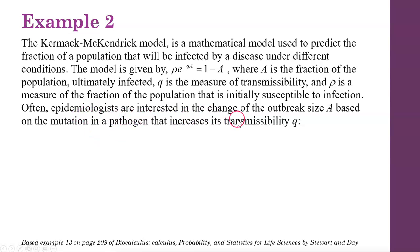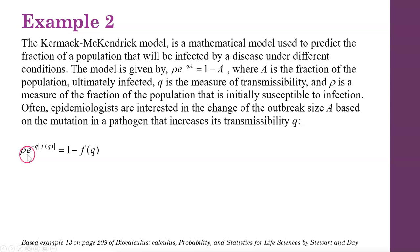Our variables are q and a. We want to know the change in outbreak size a — specifically, how fast does the fraction of the population change based on a mutation in the pathogen that increases its transmissibility q? So as the virus becomes more transmissible, how does that affect the change in outbreak size? In other words, a is considered to be a function of q, where q is our independent variable. We can rewrite the equation as rho times e to the negative q times f(q) equals 1 minus f(q), and then take the derivative.